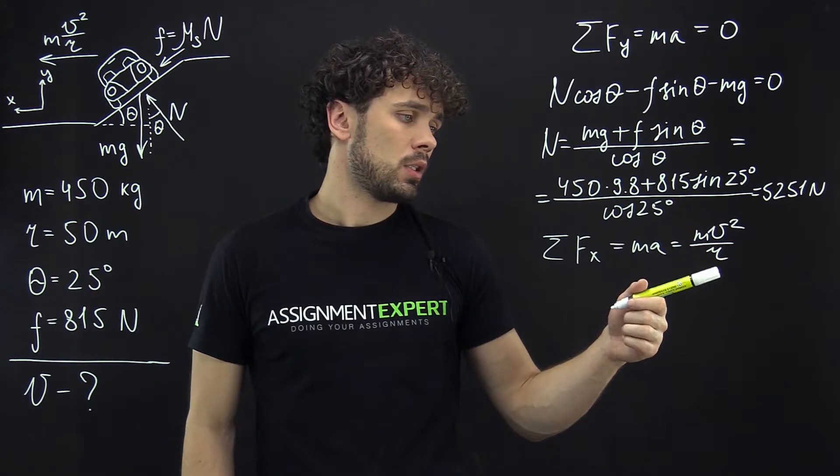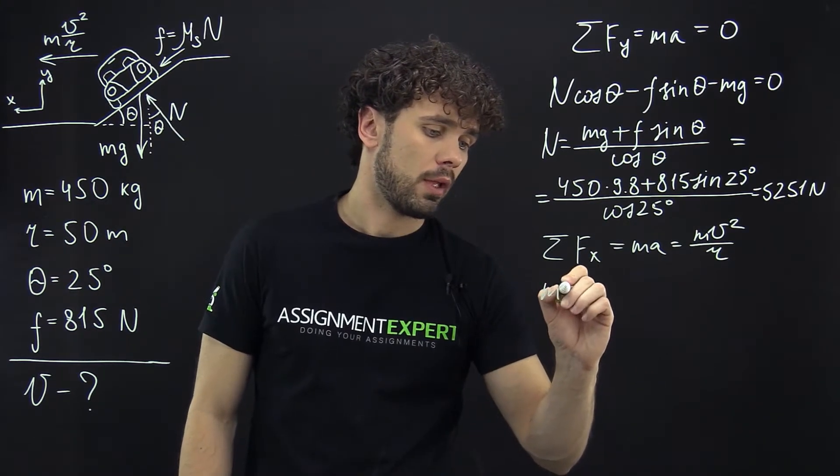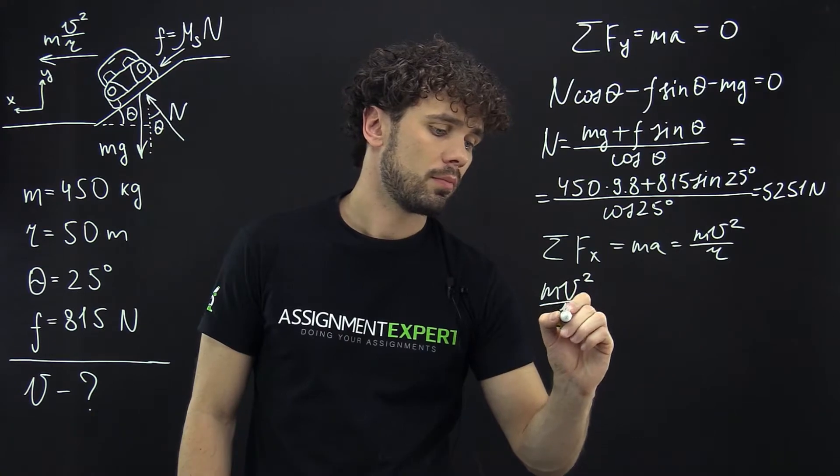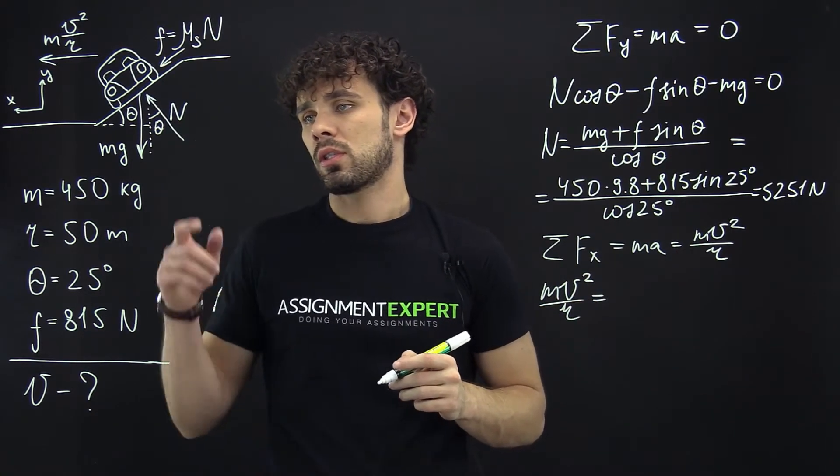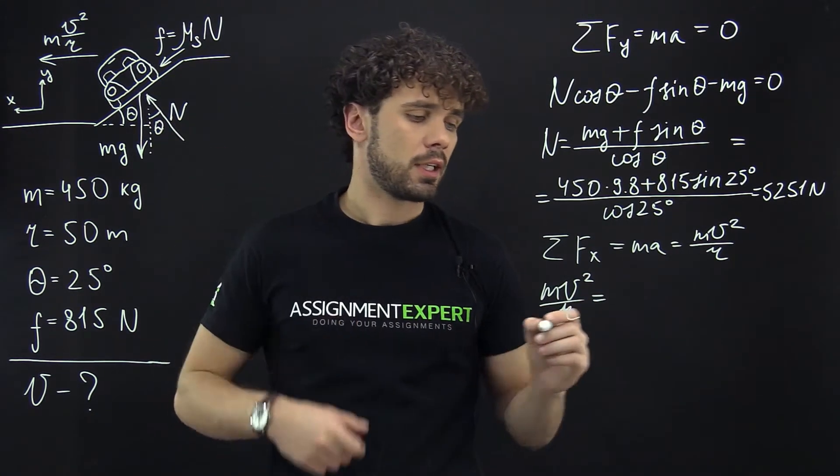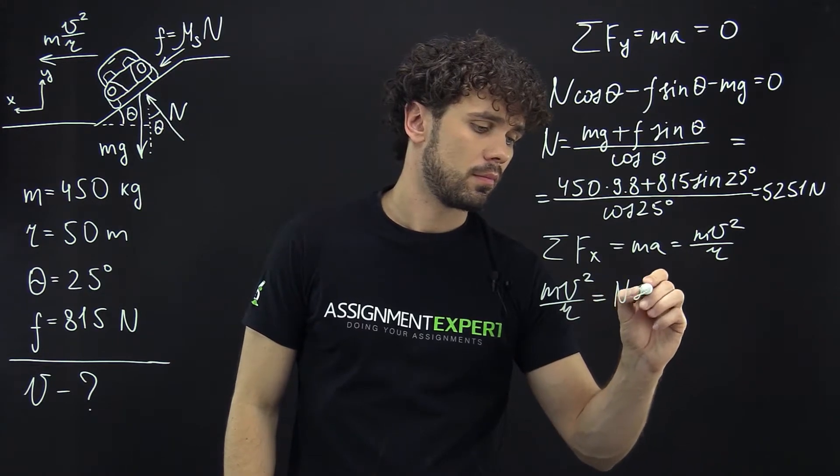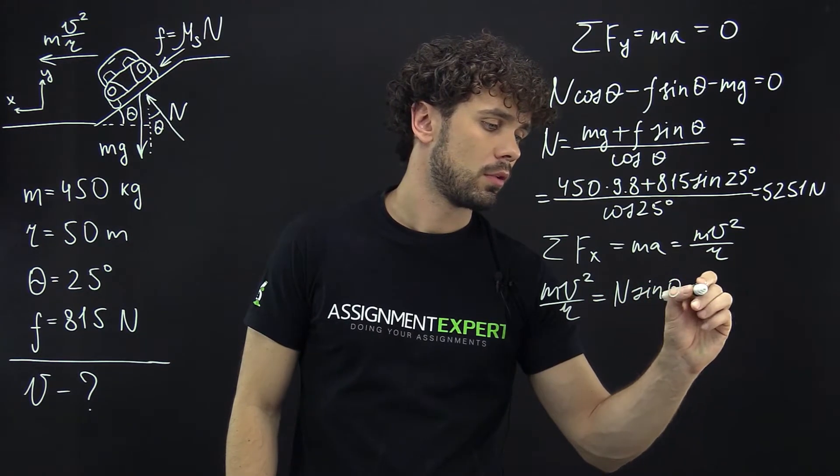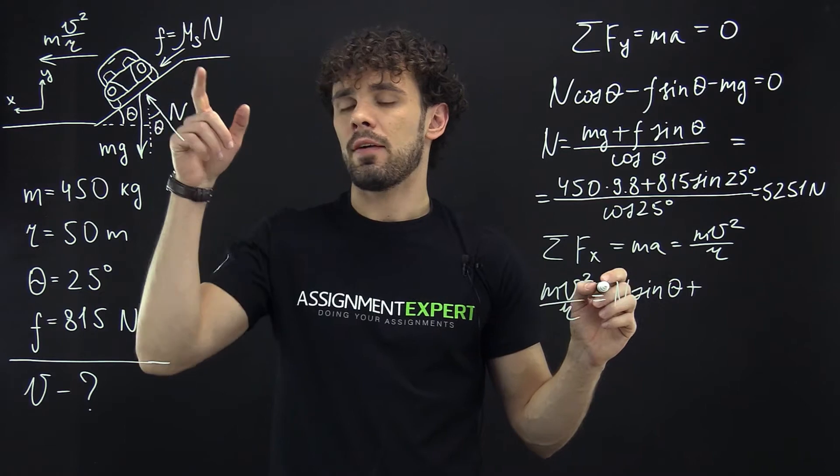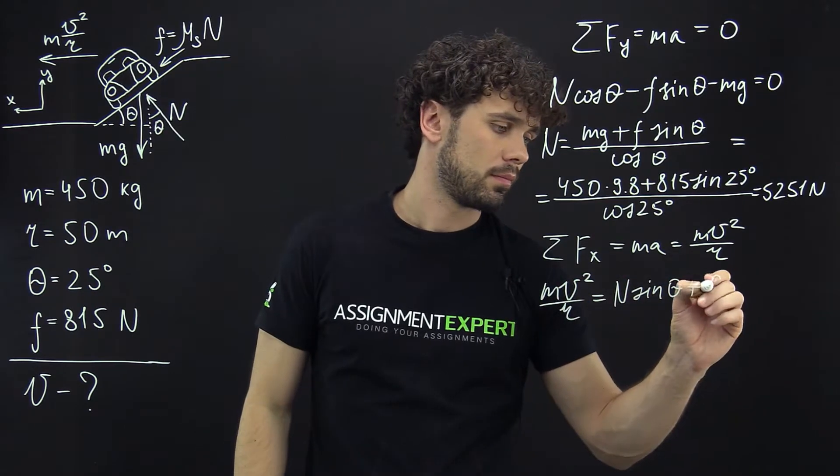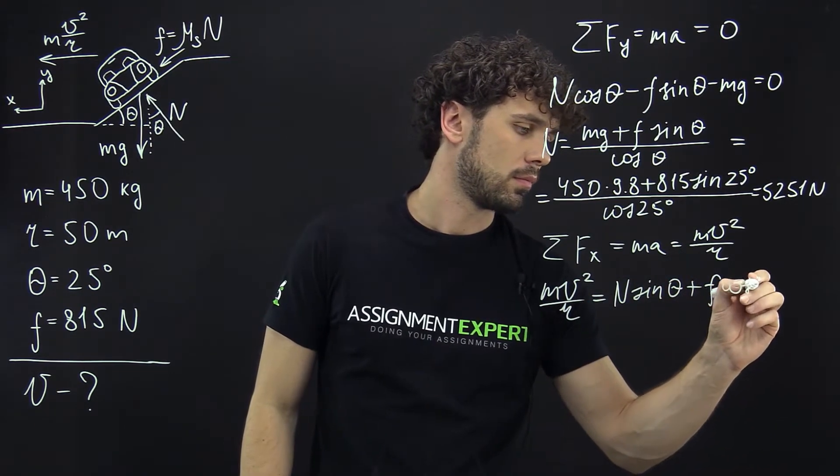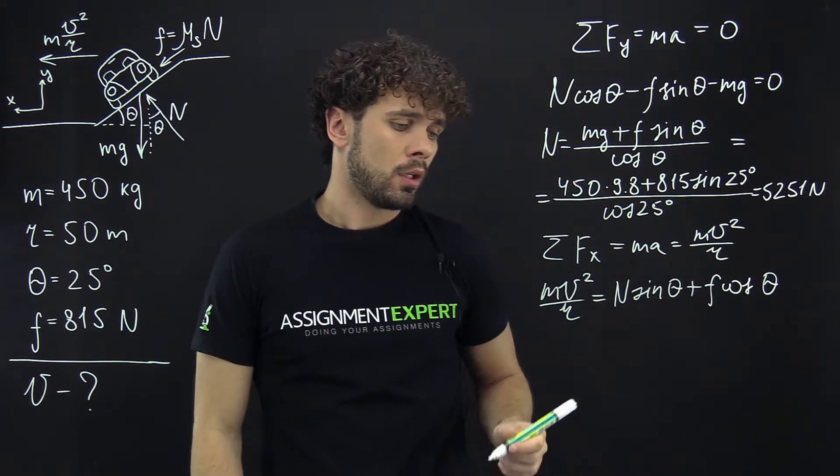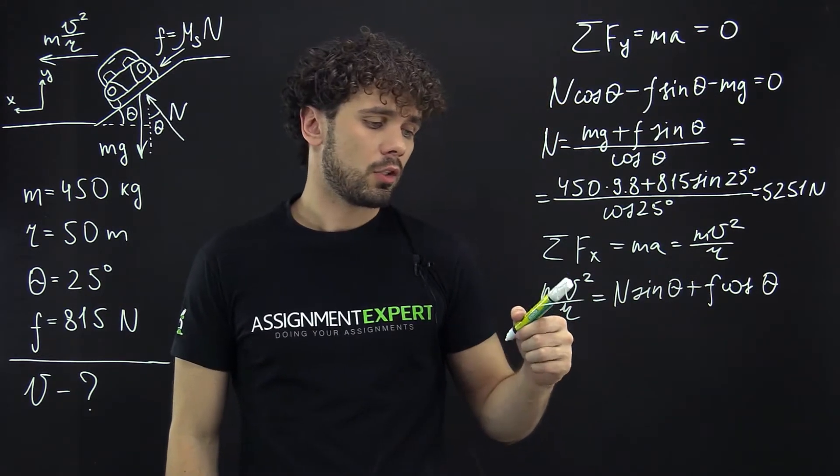So in this case we have mv²/r equals N sin θ plus F cos θ. From this equation we can derive v.